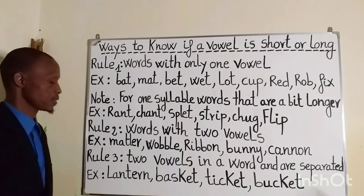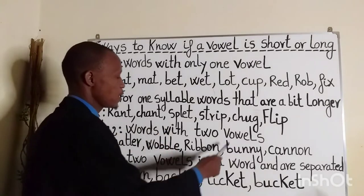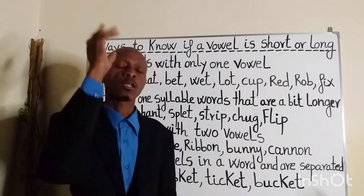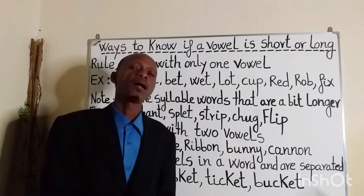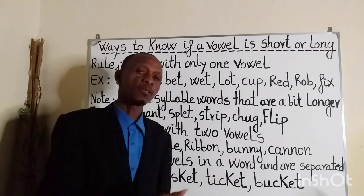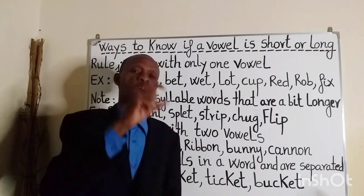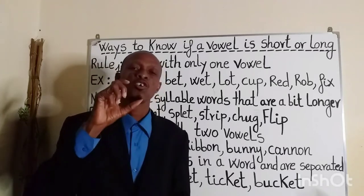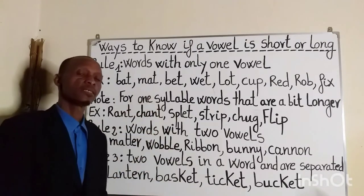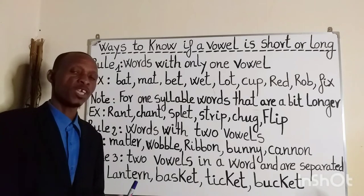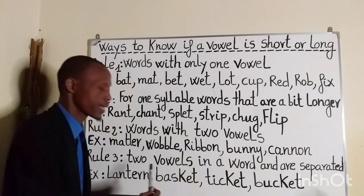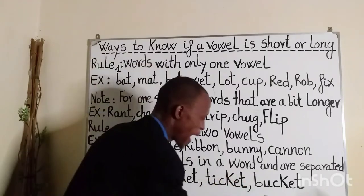Rule number three: two vowels in a word separated by two or more letters. If a word has two vowels and these vowels are separated by two or more letters, the first vowel is usually short. Examples: 'lantern' — a lamp with a transparent case protecting the flame; 'basket'; 'ticket'; 'bucket.'